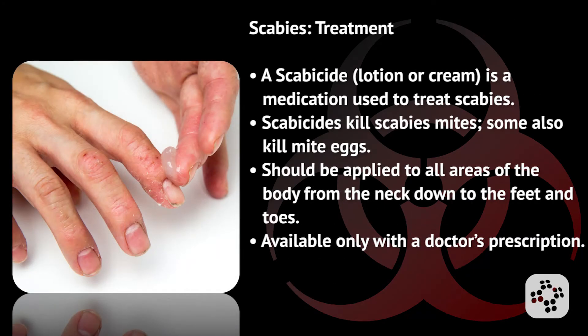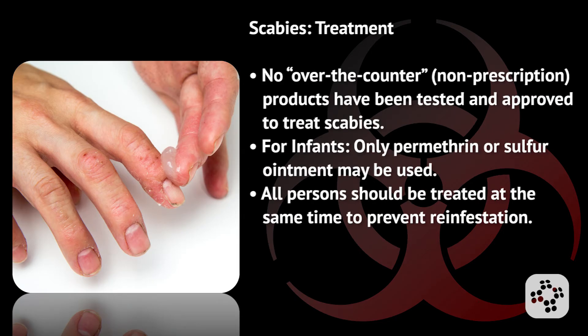What is the best treatment for scabies? Scabicides, usually found in a lotion or cream, are the medication used to treat scabies. Scabicides kill scabies mites, and some also kill mite eggs. They should be applied to all areas of the body from the neck down to the feet and toes. Available only by a doctor's prescription — no over-the-counter or non-prescription products have been tested and approved to treat scabies. For infants, only permethrin or sulfur ointment may be used, and all persons should be treated at the same time to prevent reinfestation.